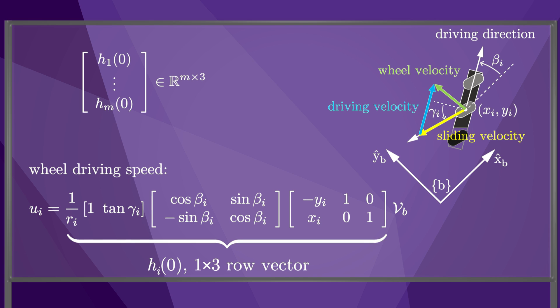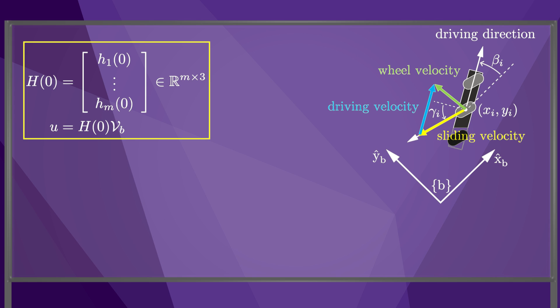We can stack the Hi row vectors for the m wheels to create an m by 3 matrix called H. Then the vector of wheel velocities for a given chassis twist is calculated as u equals H times vB. This procedure only works if H is full rank, or rank 3.